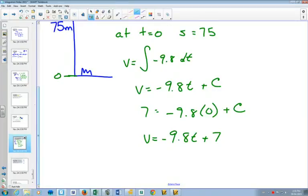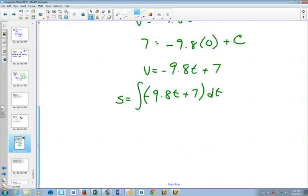From there, we integrate again to find our displacement, integrating with respect to t. You get 9.8 divided by 2. I just changed that to 4.9 right away. Plus 7t plus d. And again, since we know that the displacement, it's starting 75 meters above the ground to begin with, plugging in 0 for t will mean that d has to be 75.